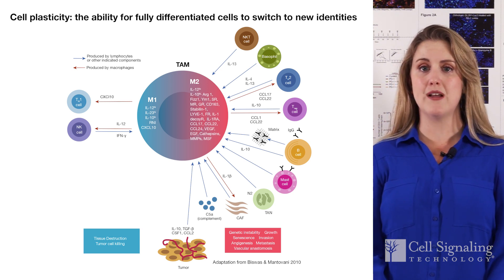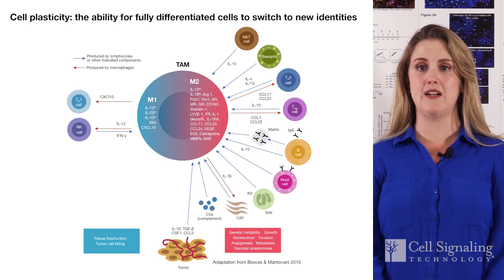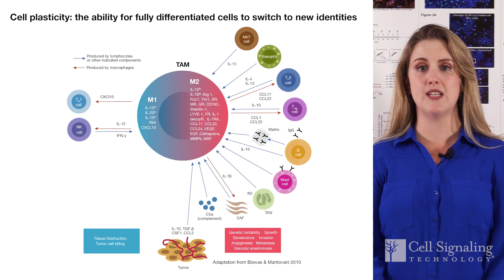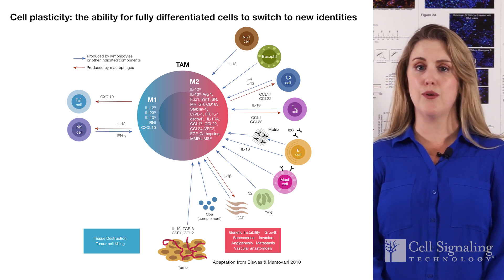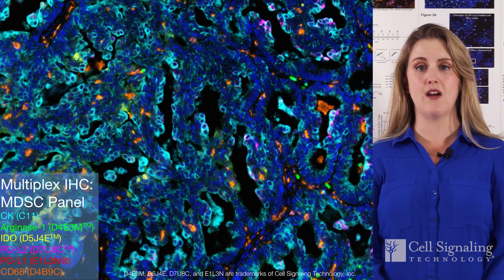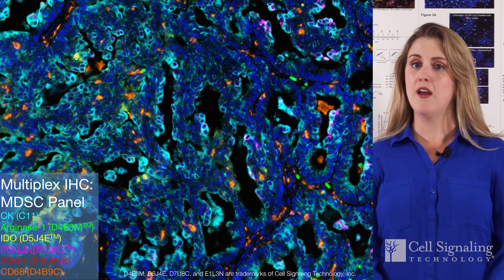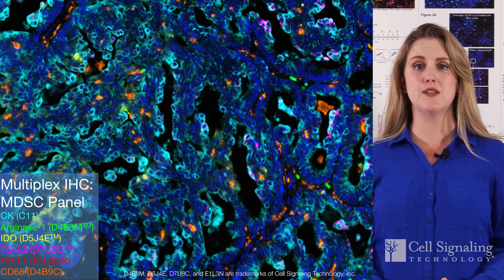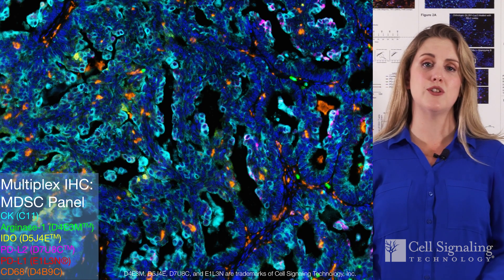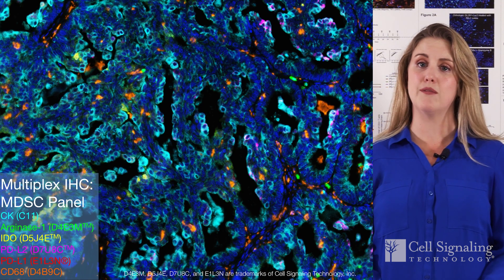More than one marker must be used to identify M1 or M2 functional states, so multiplex labeling by flow cytometry, immunofluorescence, or immunohistochemistry is likely required.